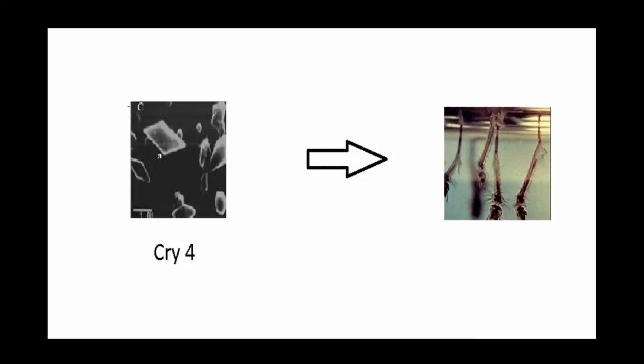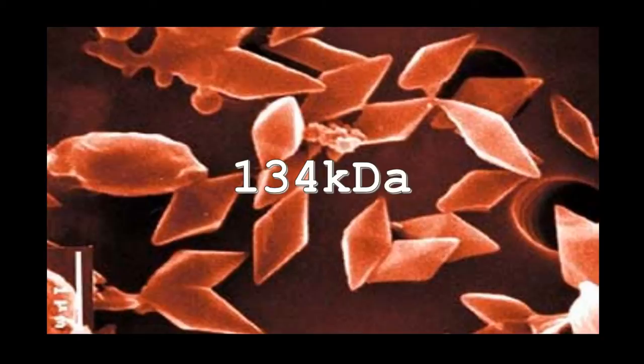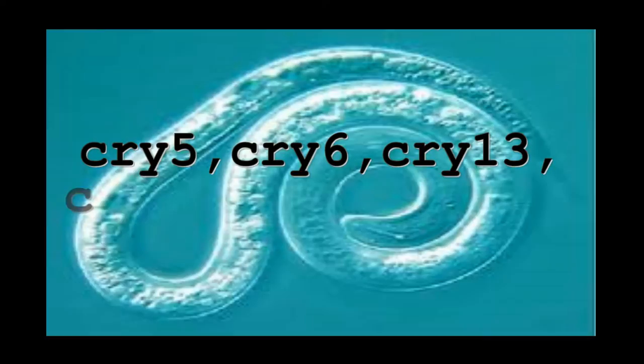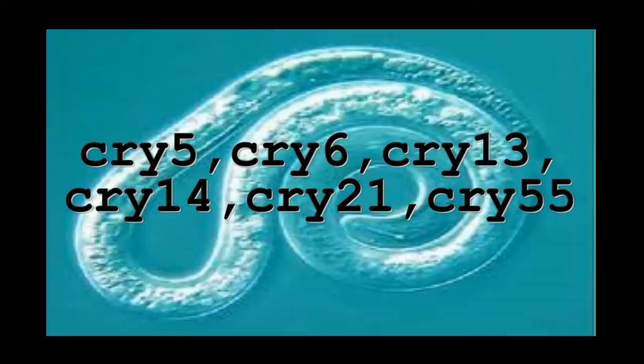The Cry4 endotoxins are characterized by their specificity to Diptera. The crystals are bipyramidal in nature and their size is about 134 kD. Some crystal endotoxins act as nematicides — that is, they are toxic to nematodes. Some of the common endotoxins that have nematicidal activities are Cry5, Cry6, Cry13, Cry14, Cry21, and Cry55.